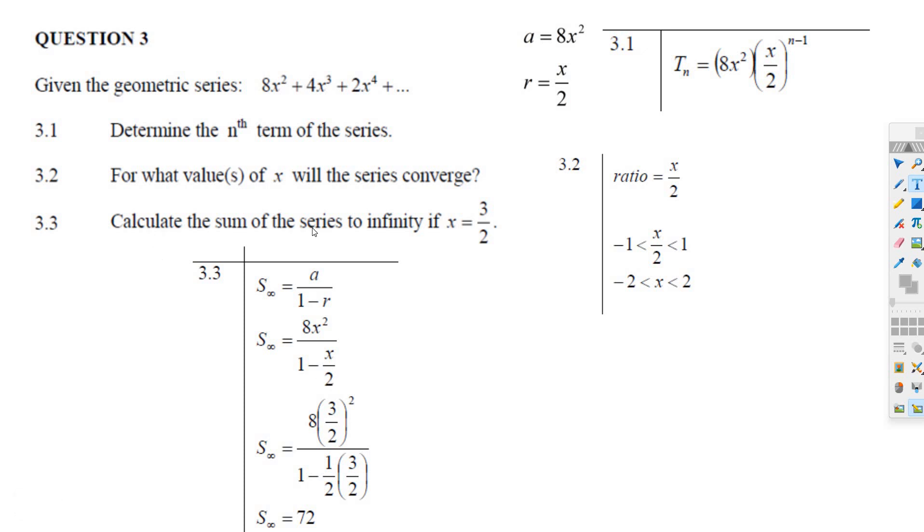But it says calculate the sum of the series to infinity if x is 3 over 2. So instead of x, put in 3 over 2. You can put this in your calculator, actually. And what you're going to get when you put this in your calculator, that's 9 over 4 and 8 times 9 over 4. Things cancel. You can do all the fraction work. But if you put this into your calculator, your calculator will tell you that the answer is 72. You go ahead and try it.